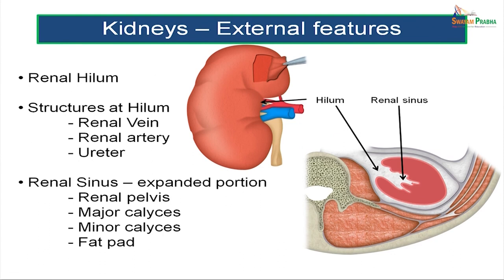Coming to the renal hilum — the structures of the hilum antero-posteriorly include the renal vein anteriorly, the renal artery a little posterior to the renal vein, and posteriormost is the ureter. This medial slit in the kidney is the hilum, and the hilum leads into an empty space within the substance of the kidney called the renal sinus. The renal sinus is the expanded portion which contains the renal pelvis, the major calyces, the minor calyces, and a certain amount of fat.